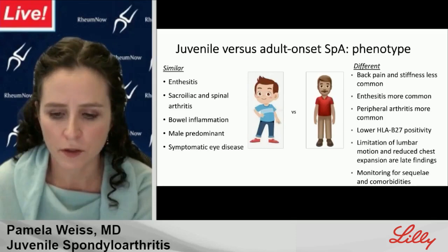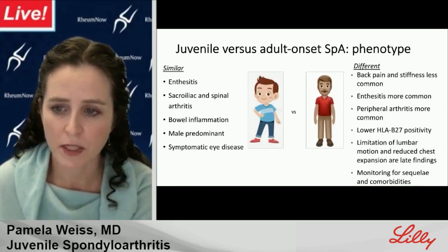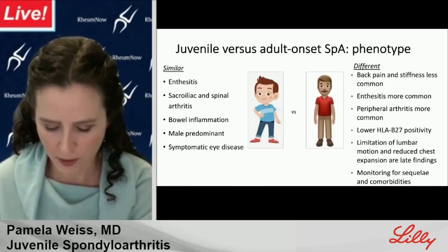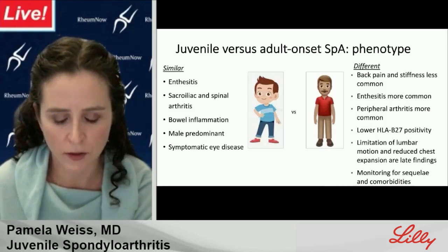In comparison to adults, children are less often HLA-B27 positive. Limitation of lumbar motion and reduced chest extension are typically late findings and are not routinely monitored in pediatric clinics. Monitoring for sequelae and comorbidities in juvenile onset disease is entirely different than in adult onset disease.